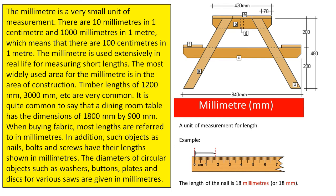The millimetre is a very small unit of measurement. There are 10 millimetres in 1 centimetre and 1000 millimetres in 1 metre, which means that there are 100 centimetres in 1 metre. The millimetre is used extensively in real life for measuring short lengths.